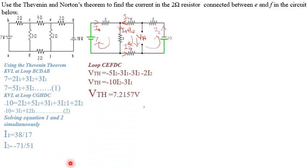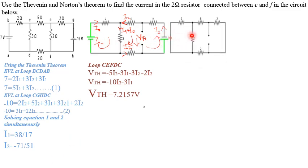After finding VTH, the next step is to find RTH. To find RTH we short-circuit the voltage sources and replace them with short circuits, then redraw the circuit. Looking into the E-F terminals, we first notice that the 2-ohm and 3-ohm resistors are in parallel with each other: (2 × 3) / (2 + 3) = 1.2 ohms.